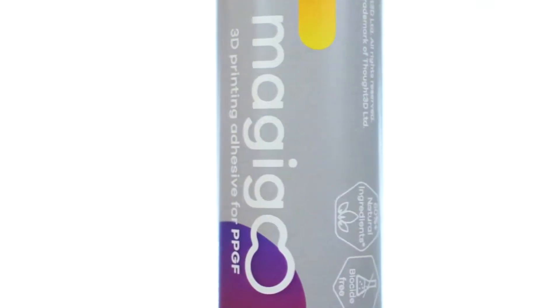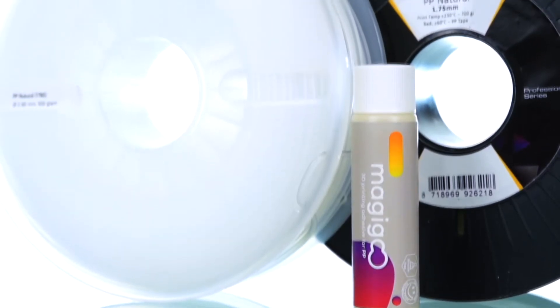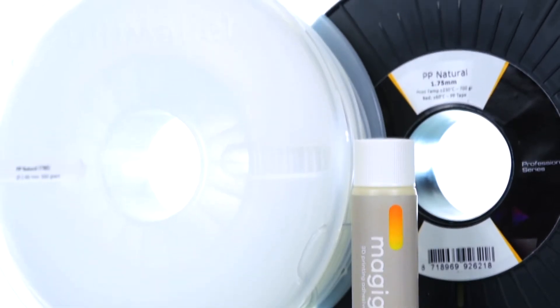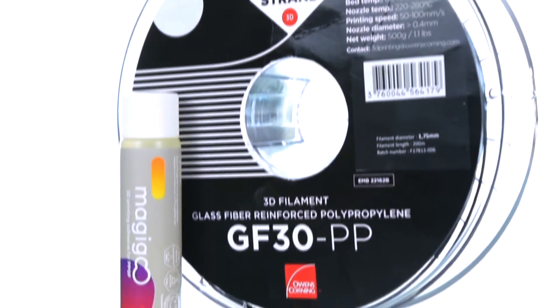Printing with polypropylene can be quite a challenge. Magigoo PP and Magigoo PPGF have been specifically formulated to make printing with these filaments easy and reliable.